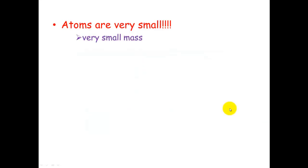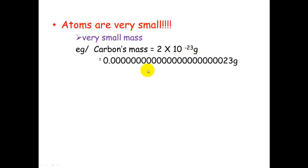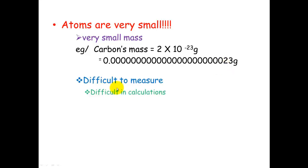Because atoms are so small, they have a very small mass. Carbon's mass is 2×10⁻²³ grams — that is 0.00000...23 grams. It's tiny, really tiny. This creates a problem for chemists because it's difficult to measure and also difficult to use in calculations.